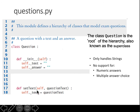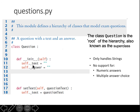To create a question, there's a method called set_text that accepts the text of the question. Inside the function, the instance variable text is set to whatever question text the user provides — for example, 'What is the birth year of Barack Obama?' When it's passed to set_text, it will be set on the object's text property.